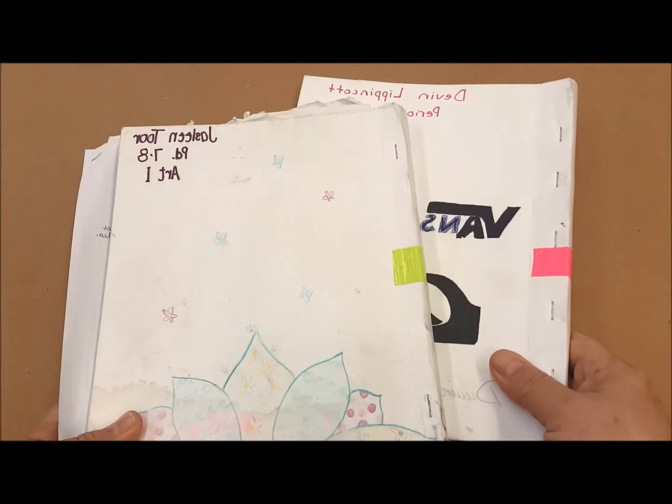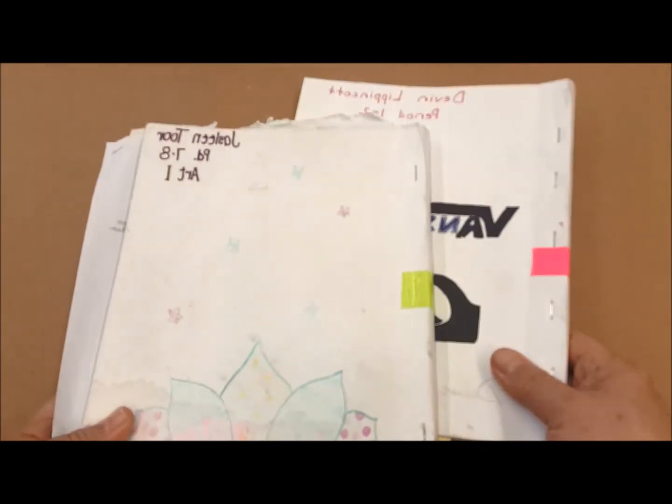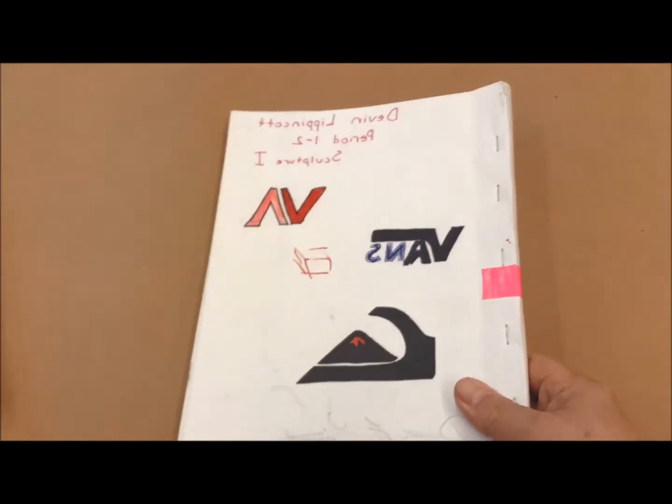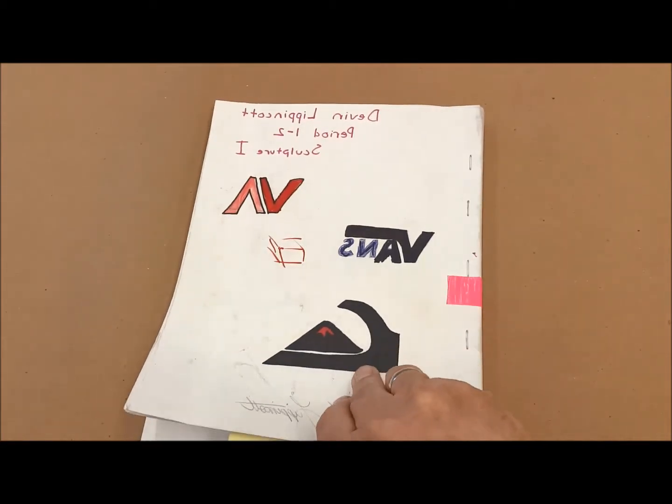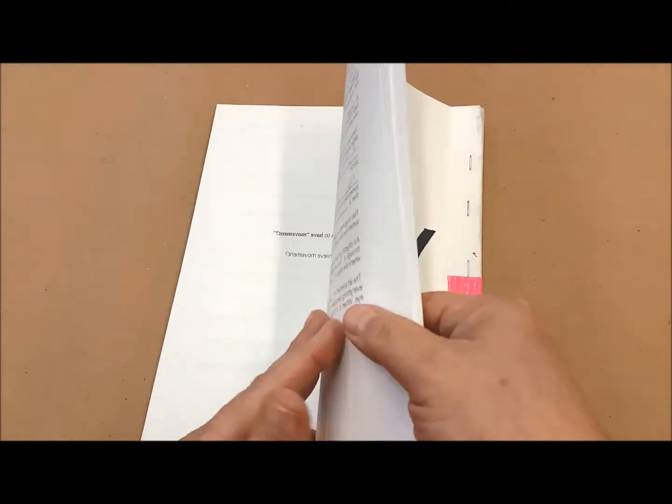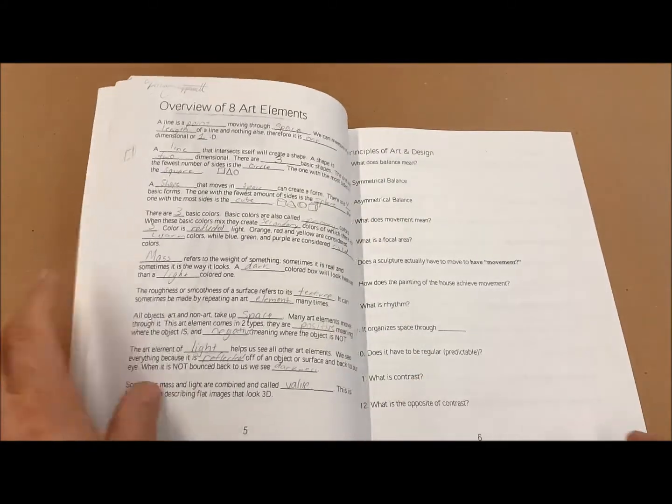This was used for my 2D course of Art 1, and then sculpture is essentially Art 1 but in 3D. It has the same kinds of things, the elements and principles up front. It is the same book, but then they're going to treat it a little bit differently.